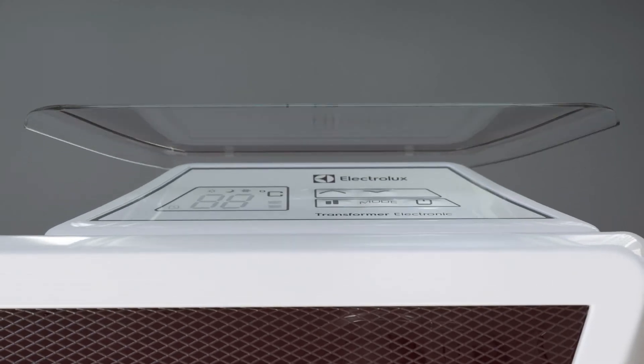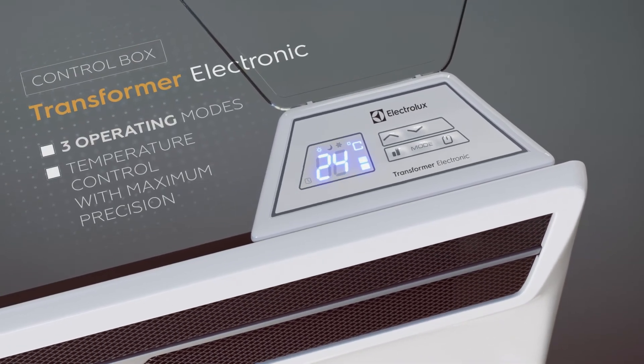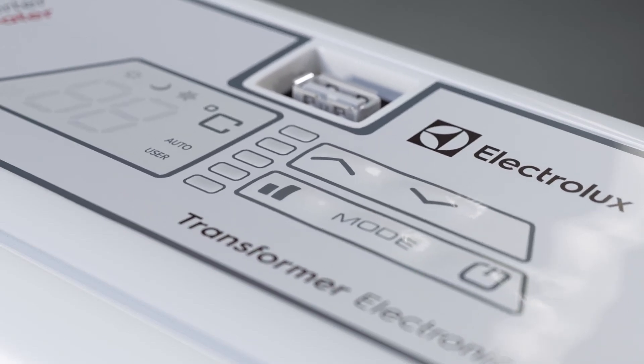The Transformer electronic control box allows you to choose between three modes of operation, two levels of power, and maintains the desired temperature with the highest precision.